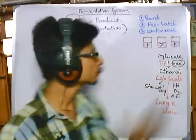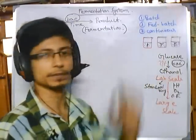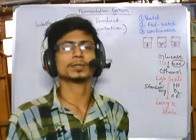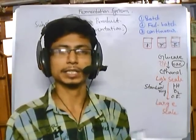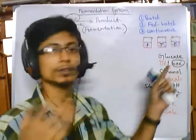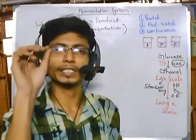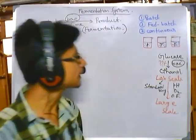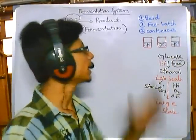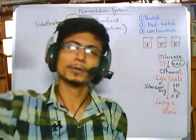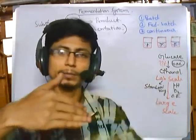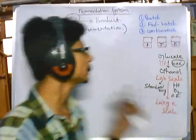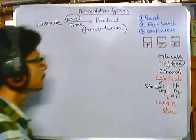In batch fermentation, one batch is placed, we provide substrate and inoculum, close the batch, give sufficient time, then take out the product for downstream processing. When the substrate can be toxic or produce viscosity that limits oxygen access, we use fed-batch fermentation — providing substrate in small amounts over time. In continuous fermentation, substrate is provided throughout and product is taken out throughout.